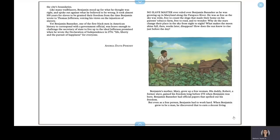No slave master ever ruled over Benjamin Banneker as he was growing up in Maryland along the Patapsco River. He was as free as the sky was wide, free to count the slugs that made their home on his parents' tobacco farm, free to read and to wonder. Why do the stars change their place in the sky from night to night? What makes the moon shine full, then weeks later disappear? How does the sun know to rise just before the day?